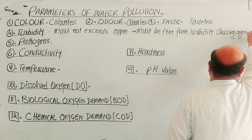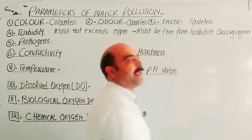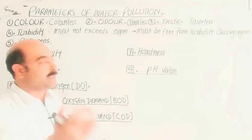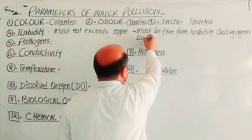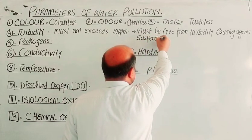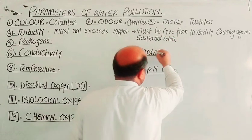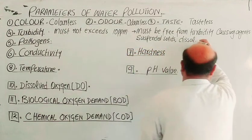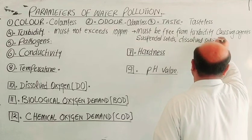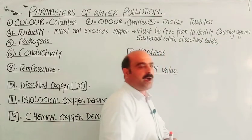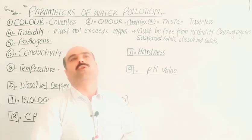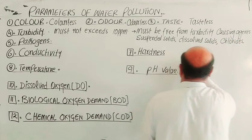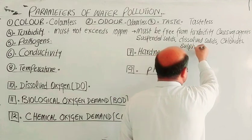The water must be free from turbidity-causing agents. Turbidity is caused by suspended solids and dissolved solids. Dissolved solids such as chlorides, sulfates, and phosphates are the main sources of turbidity in water.